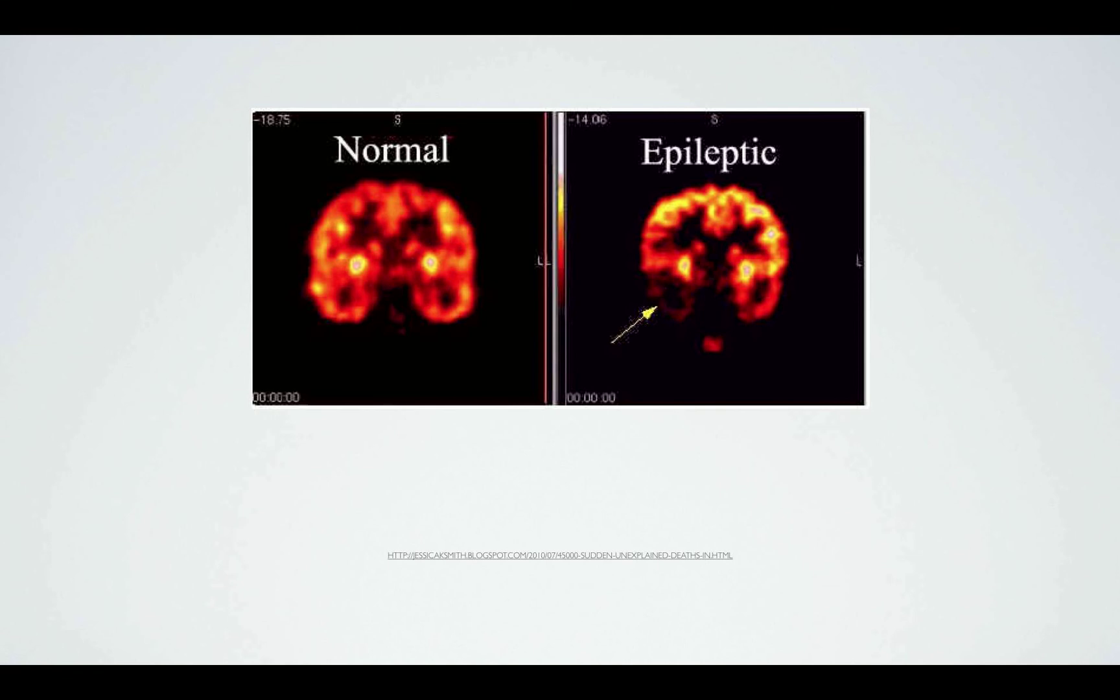If the epilepsy cannot be treated with drugs, the defective part of the brain can be located using EEG and then removed through surgery.